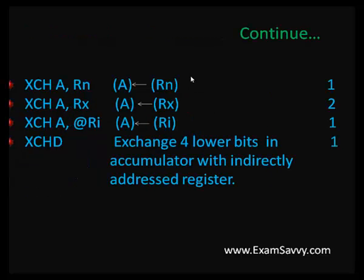For example, XCH A, Rn — we are exchanging the contents of Rn register with A (accumulator), and the size is 1-byte. The entire 1-byte, which is 8-bits, is transferred into the accumulator. We can transfer the entire bits into the register called accumulator.